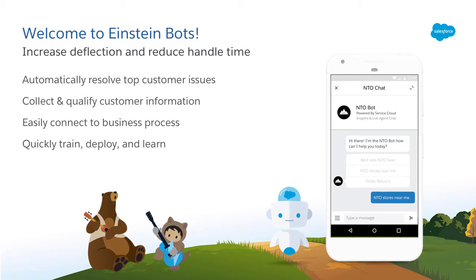And when needed, Einstein Bots can seamlessly hand off to an agent. Einstein Bots can be connected to existing business processes to automatically initiate or complete actions on an agent's behalf. And all of this is done declaratively with the Bot Builder, where you can train the bot with existing customer service data and even enable inline bot feedback so the bot is always learning.